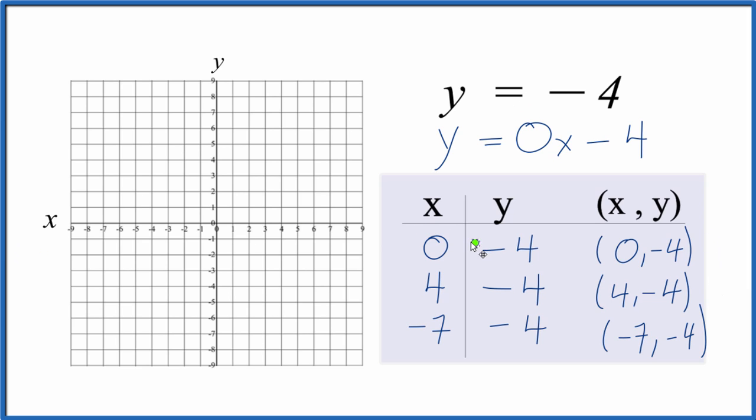So let's go to x is 0, and then y is negative 4 right there. If x is 4, y is negative 4. You can see everything's going to be on this line here. If x is negative 7, we go down here, y is negative 4. So we have this horizontal line here for y equals negative 4.